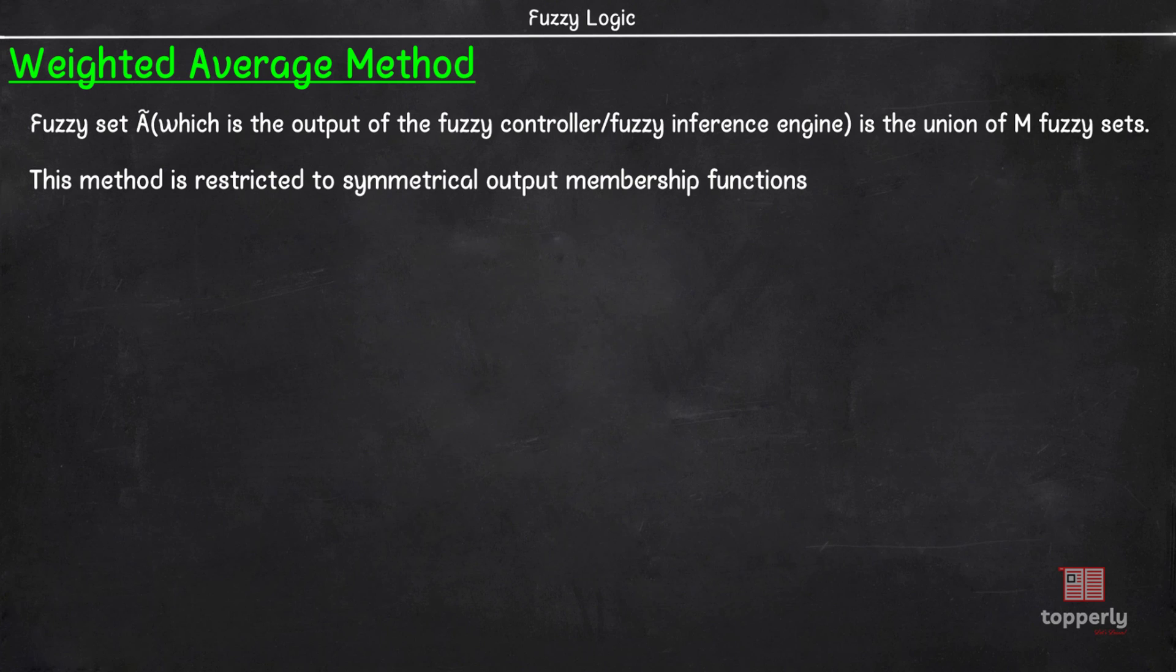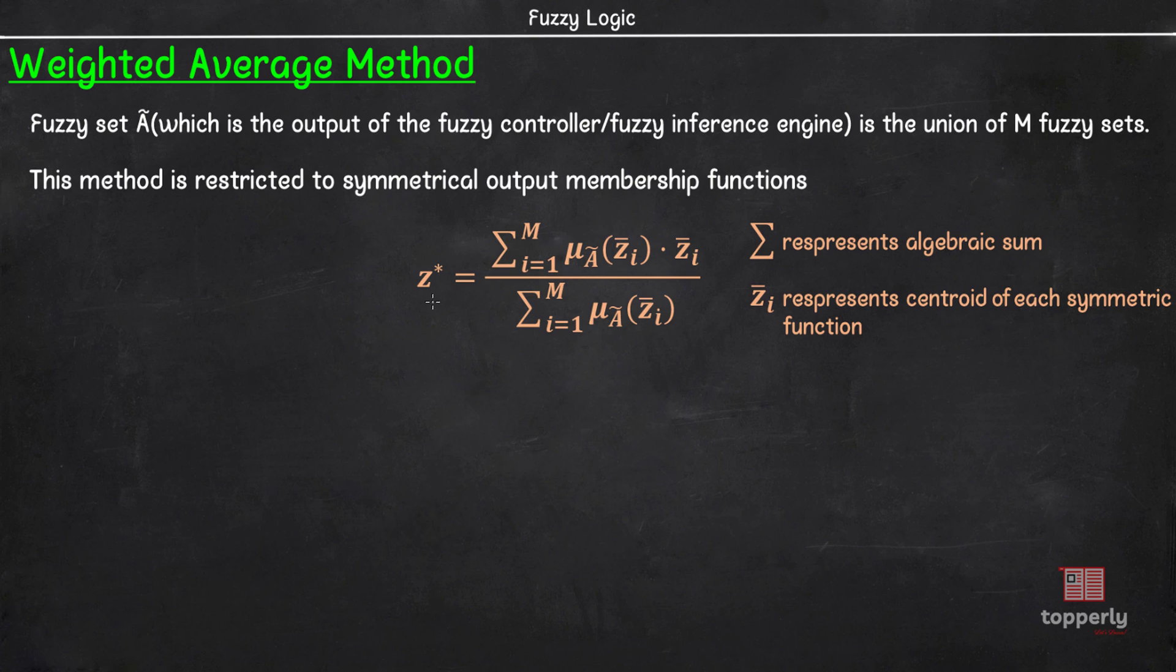Considering that these two points are valid, the defuzzified value z* is given by z* = Σ μ_A(z̄_i) · z̄_i divided by Σ μ_A(z̄_i). Here, Σ represents the algebraic sum and z̄_i represents the centroid of each symmetric membership function.